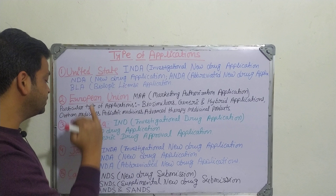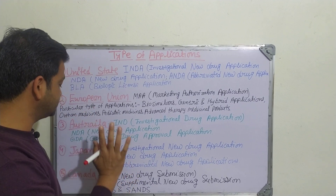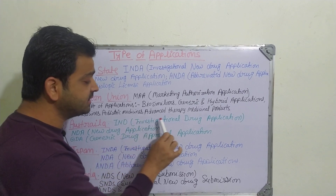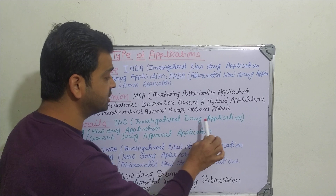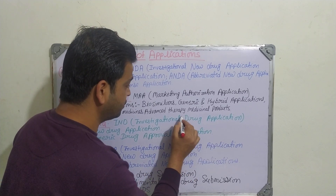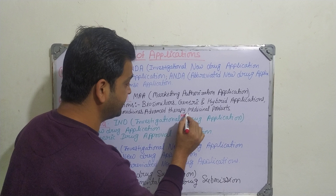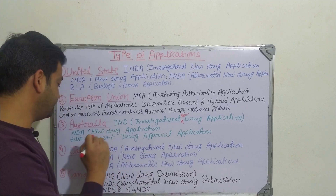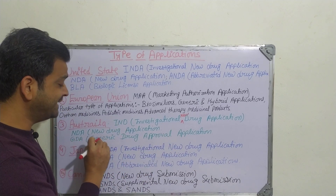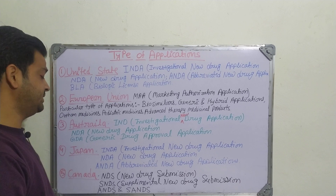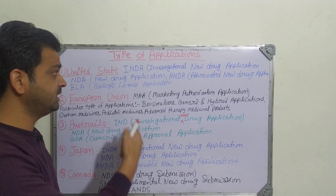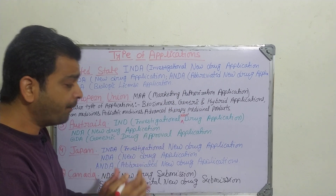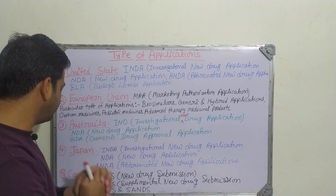Coming to the third country, Australia. Australia also has similar application types to the US. First is the IND — Investigational New Drug Application. Then the NDA — New Drug Application. Then the GDA — Generic Drug Approval Application — which is equivalent to the ANDA used in the US; here in Australia they use the term 'Generic Drug Approval' instead of 'Abbreviated.'